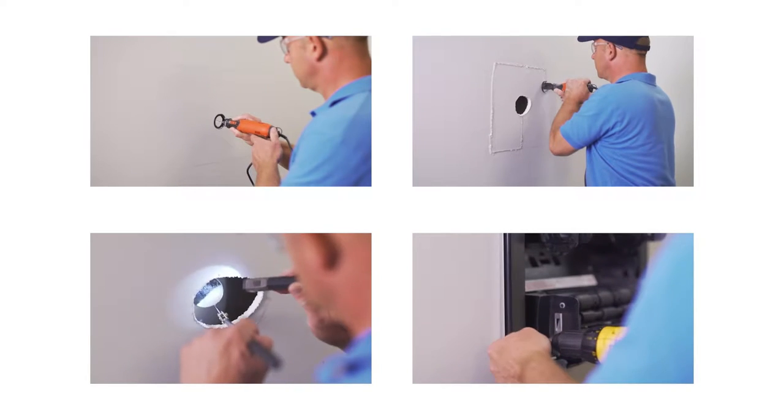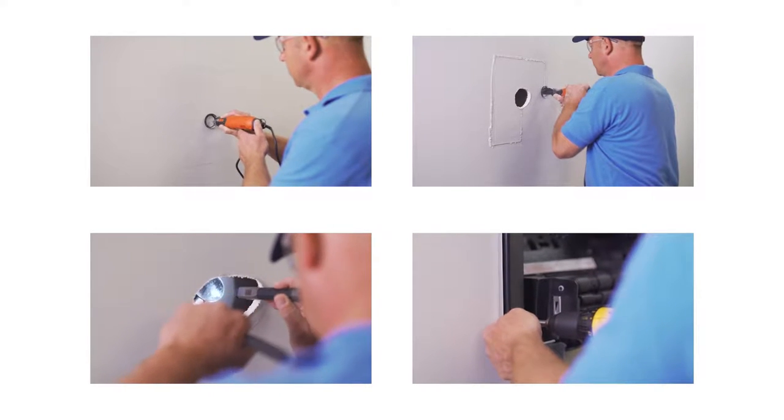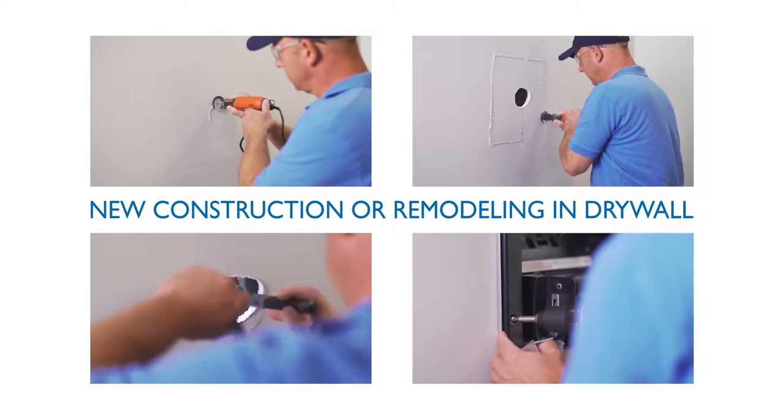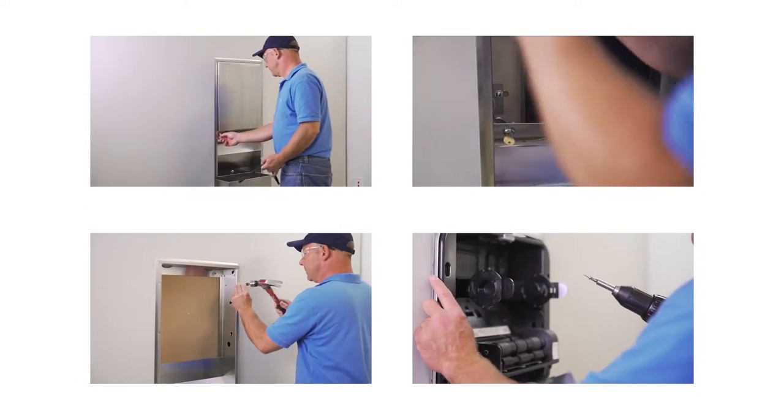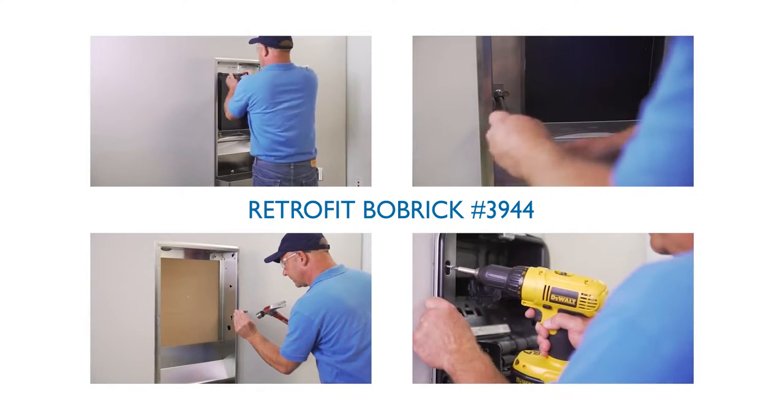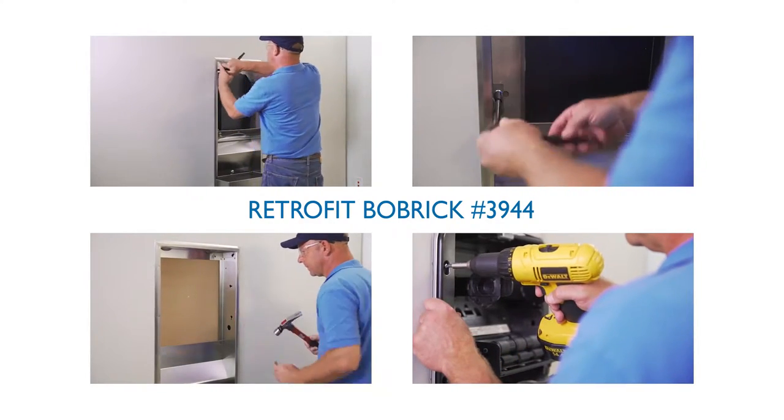The following video covers two major types of installations. The first part covers new construction or remodeling that doesn't involve a retrofit, and the second part shows how to retrofit a Bobrick Cabinet Classic Series recessed convertible towel dispenser number 3944.